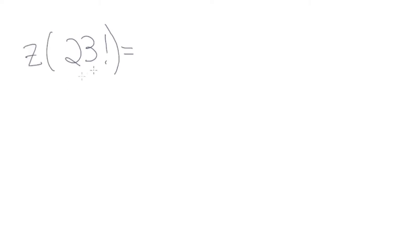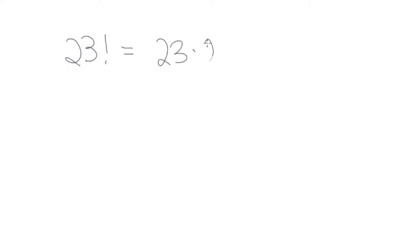Now let's suppose we're trying to find 23 factorial and we want to find the number of trailing zeros. One way is to just compute the factorial and count the zeros, but that takes too long. So we need a smarter approach for 23 times 22 down to 1.